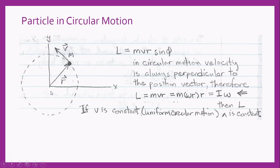Let's look at a particle traveling in circular motion. In circular motion, velocity is always perpendicular to the position vector, so sine phi equals one. We can also make the substitution that the translational velocity equals the angular velocity times radius. This gives us mass times angular velocity times r squared. But mass times r squared is the expression for a particle's rotational inertia. So for a rotating particle, its angular momentum equals its rotational inertia times its angular velocity — very similar to linear momentum, which equals mass times translational velocity.